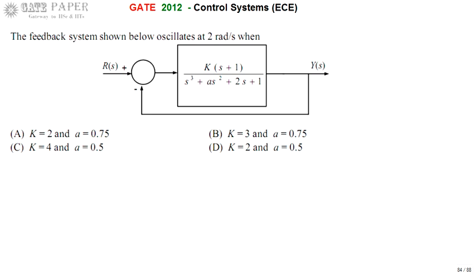Hello, we are discussing the GATE 2012 ECE paper. Look at the feedback system shown below that is oscillating at 2 radians per second. Oscillating at 2 radians per second means omega_n is equal to 2 radians per second. We need to find for what values of k and a the feedback system is oscillating at 2 radians per second.